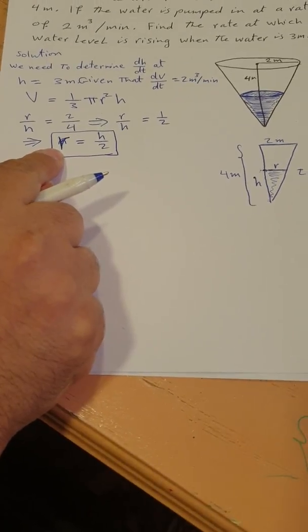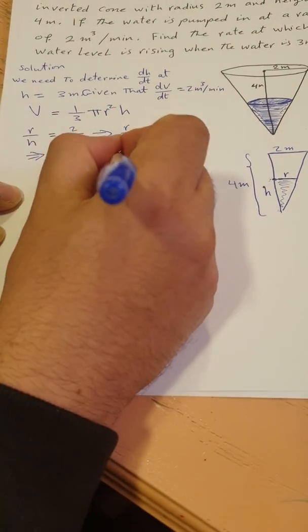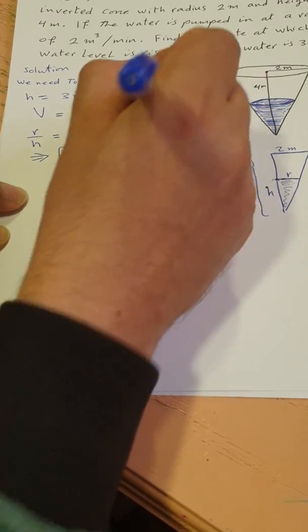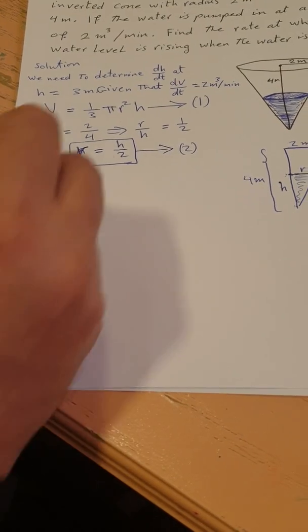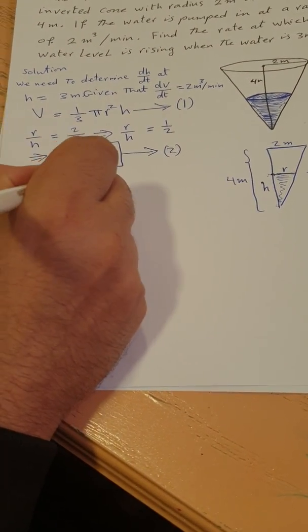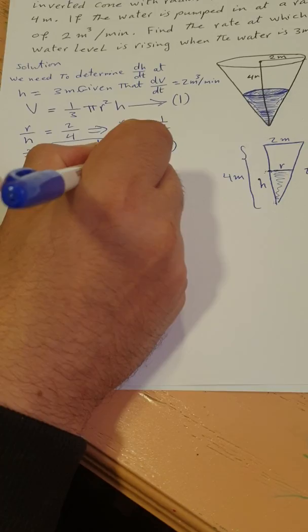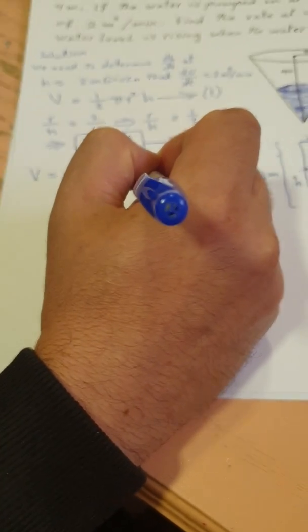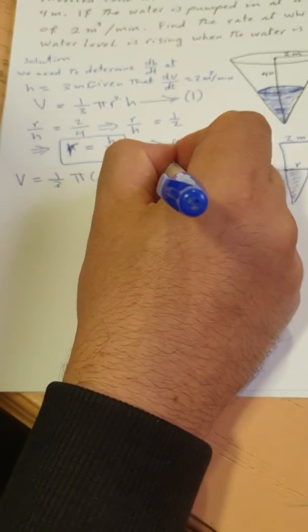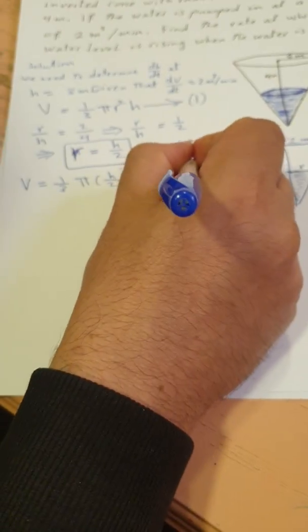This is the relation between the radius at time t and the height of the water h at time t. Now we substitute r equals h over 2 into the volume formula. We get V equals one-third pi times (h/2) squared times h, which implies the volume equals pi h cubed over 12.